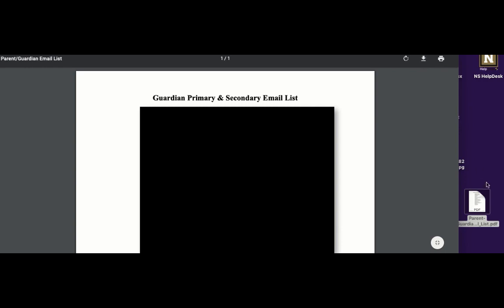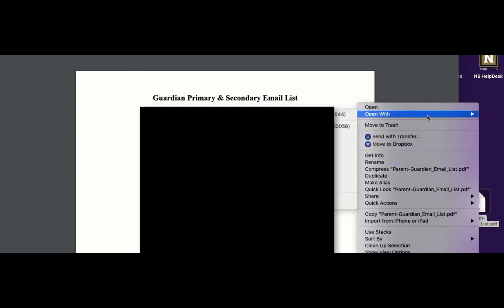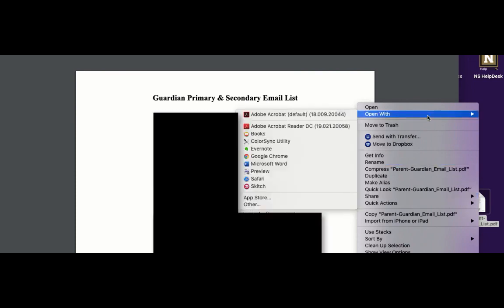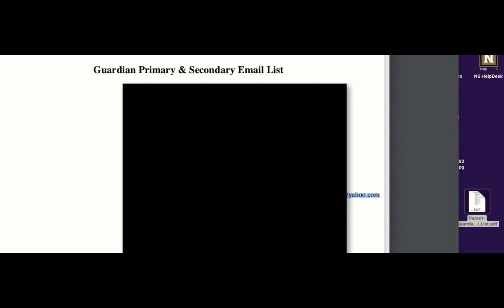I save it to my desktop. I right-click it by pushing the Control button and then clicking on it, so the Open With option comes up. If you open with Preview, it opens the exact same list, but now you can highlight it. Highlight all the email addresses and then copy that by hitting Command C.